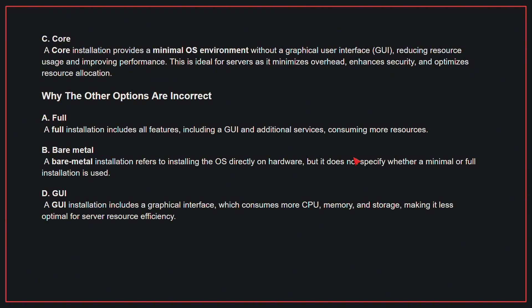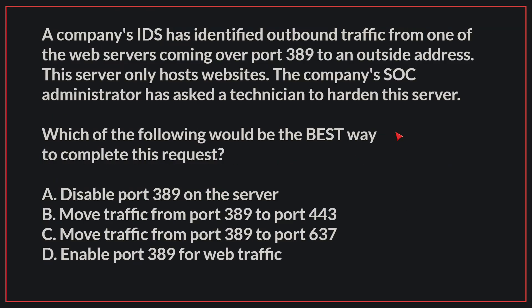D. GUI — a GUI installation includes a graphical interface, which consumes more CPU, memory, and storage, making it less optimal for server resource efficiency. Therefore, the correct answer is C, Core.